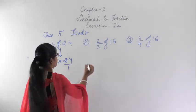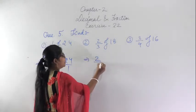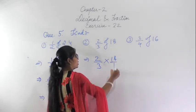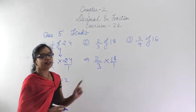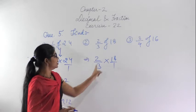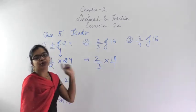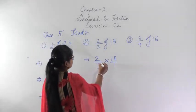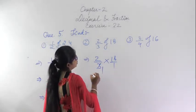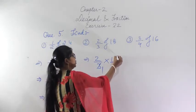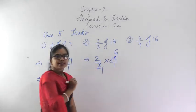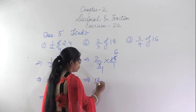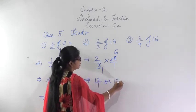For the second question, write down 2/3 of 18, which means multiply 2/3 by 18/1. If you can cancel from here, cancel it. In the 3 table: 3 ones are 3, 3 twos are 6, 3 threes are 9, 3 fours are 12, 3 fives are 15, 3 sixes are 18. So 18 is cancelled with 6. Then 2 into 6 is 12/1, which equals 12.